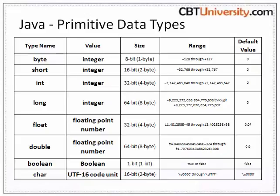Char: the char data type is a single 16-bit Unicode character that holds a single character, for example a single letter, number, or symbol. For example, 'b' in single quotes is a character, as is '1' and '$'. Character values are enclosed in single quotes. This is the difference between character and string — char uses single quotes, while strings must have double quotes.